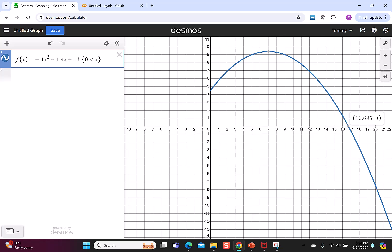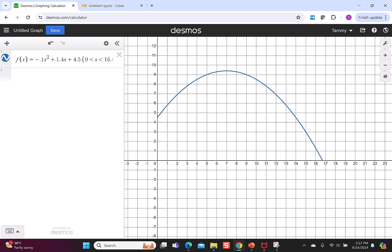Now if I go over on the x-axis, I can see an x-intercept at 16.695. I want that to be the other side of my restriction. So back to the x, I'm going to put less than 16.695. The 16.695 tells me when the ball hits the ground. The graph overall shows me the path of the ball from the time it was hit until the time it reaches the ground.